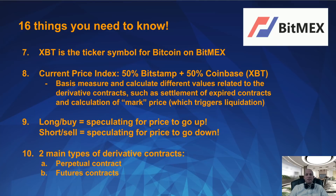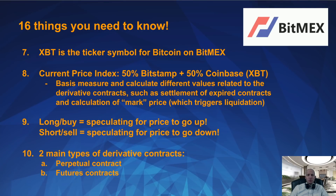XBT is the ticker symbol for Bitcoin on BitMEX instead of BTC, which is usual on other exchanges. The price index is used to track the price, and for Bitcoin this is 50% Bitstamp and 50% Coinbase. This is the basis to measure and calculate different values related to the derivative contracts, such as settlement of expired contracts and calculation of the mark price, which triggers liquidation.